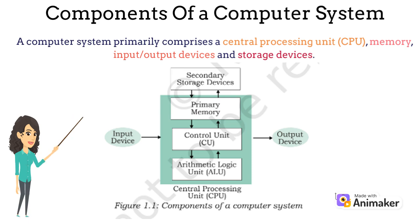The CPU is the brain of the computer that stores and processes all the data. The input devices like mouse and keyboard give instructions to the CPU. After the processing is done, the CPU provides the processed data to the output devices like monitor for users to access. Secondary memory devices are useful to store relevant data outside the CPU. The CPU consists of three components named arithmetic logic unit, memory unit, and control unit.